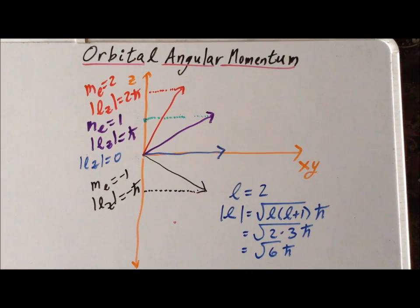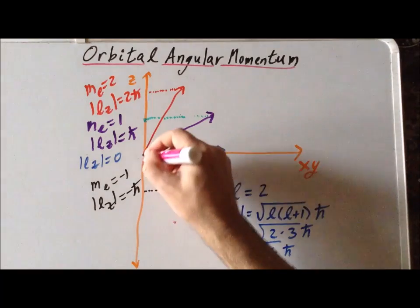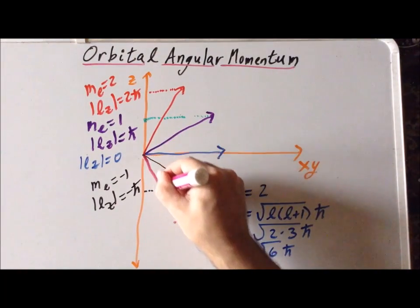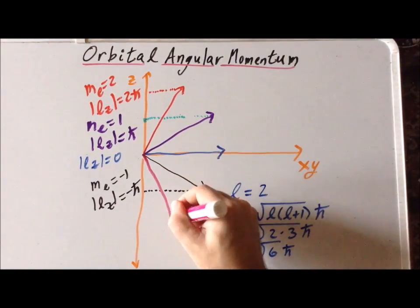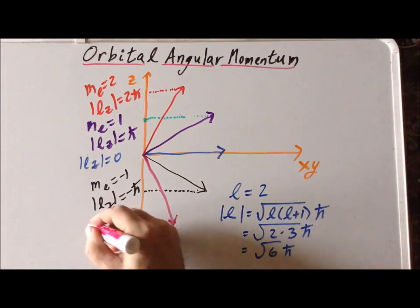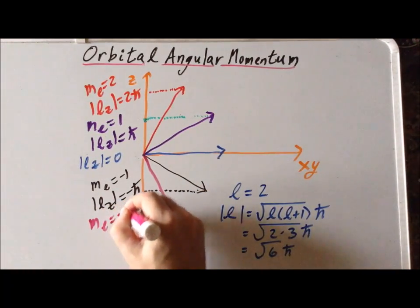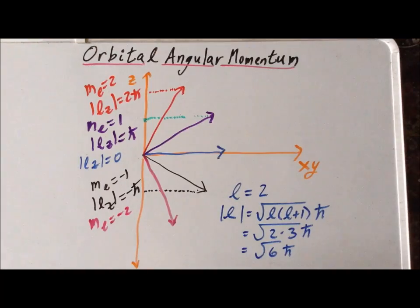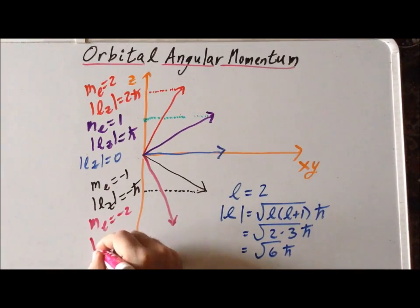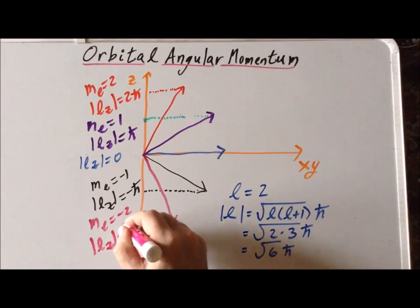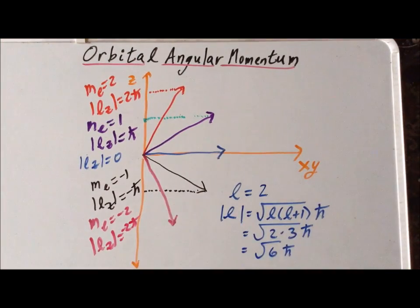The magnitude of the z-component of the angular momentum in this case is equal to negative h-bar. The fifth and final orientation of the vector, we draw in pink. This corresponds to an m sub l value of minus 2, and in that case, the magnitude of the z-component of the angular momentum is equal to negative 2 times h-bar.